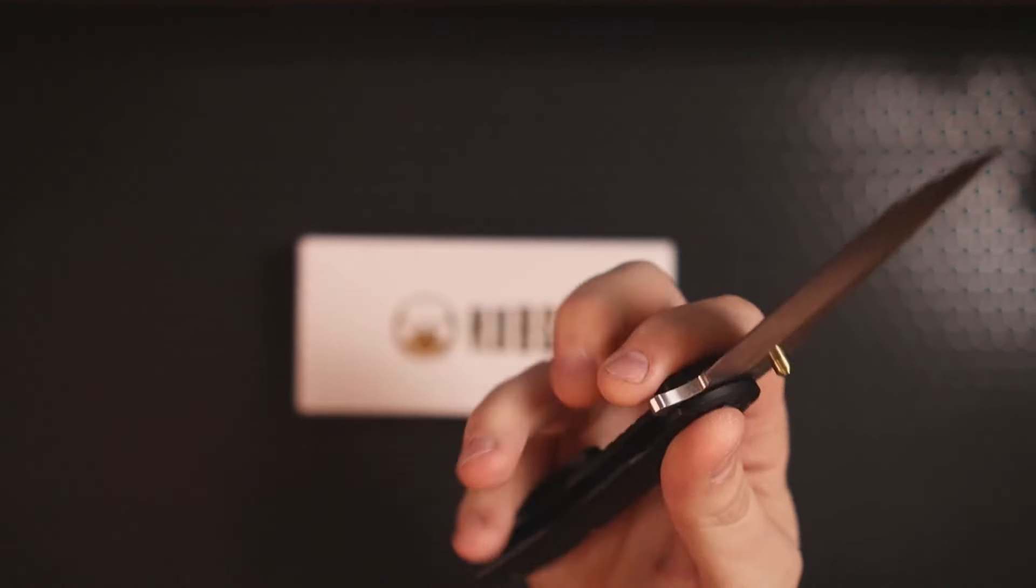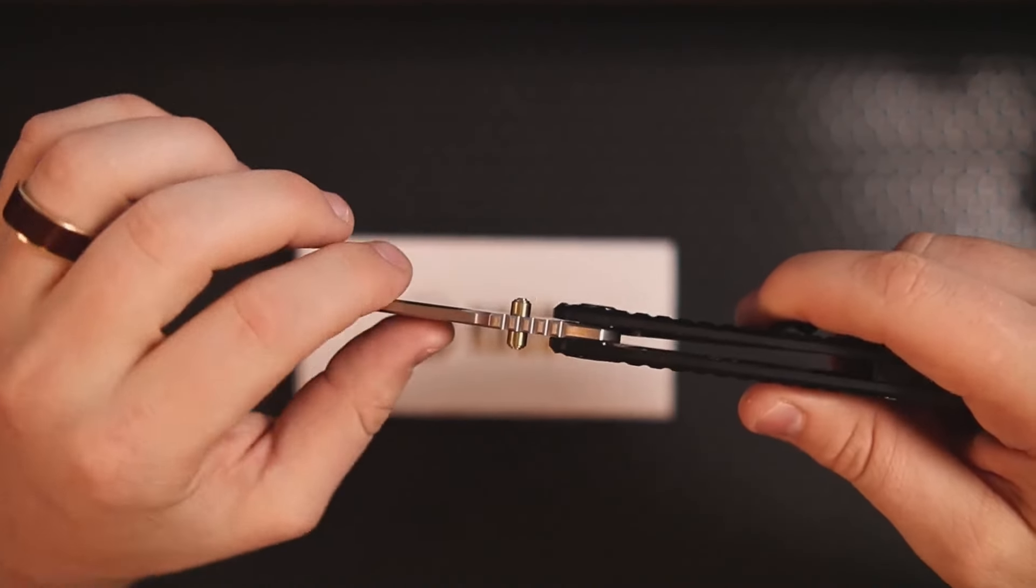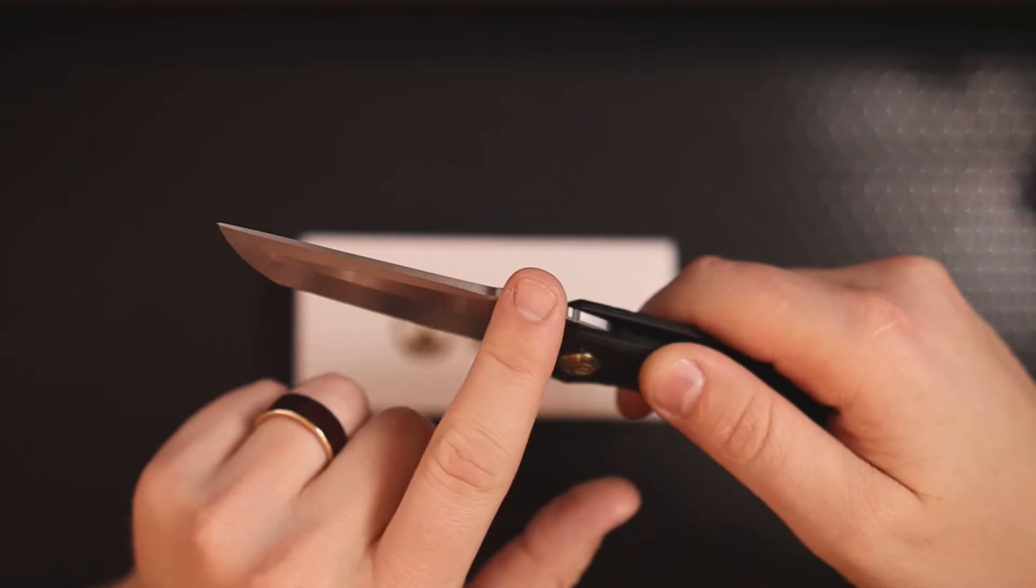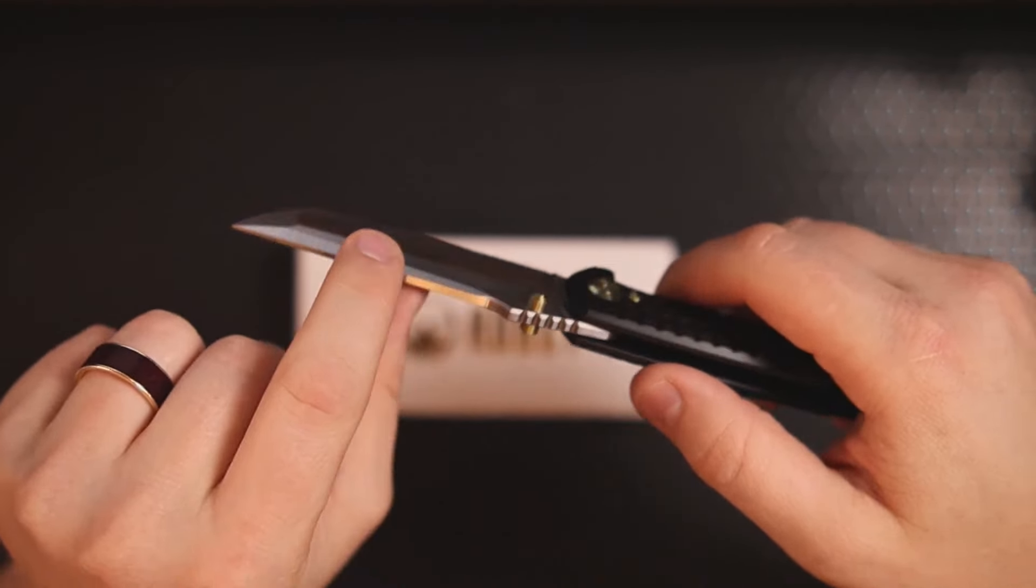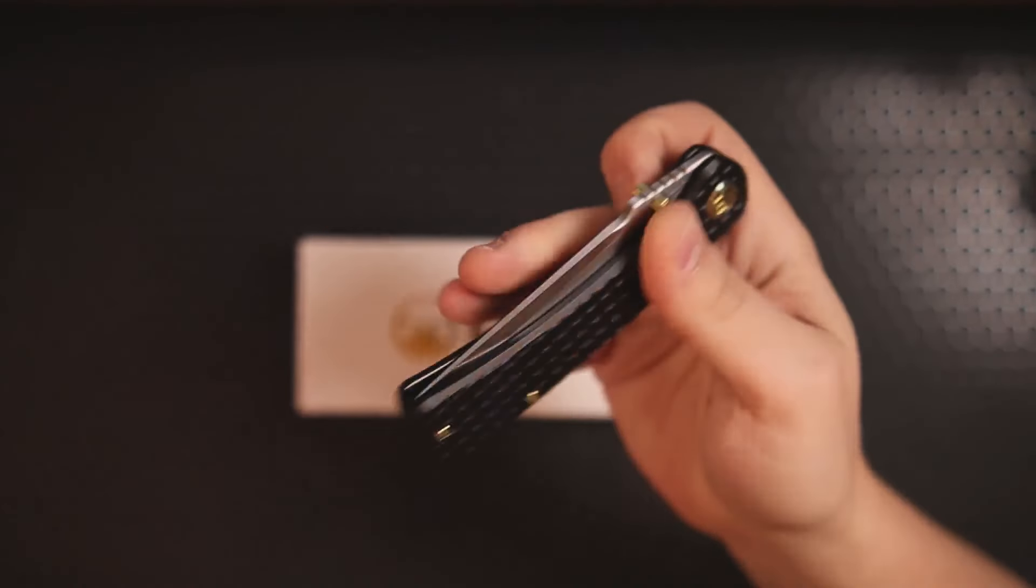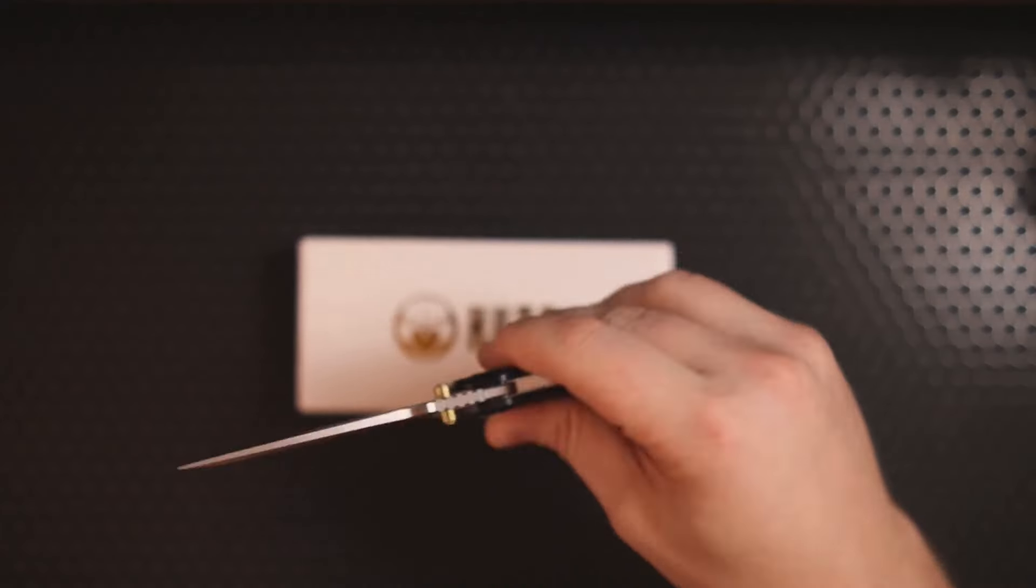And that pocket clip being a 3D milled variety is going to disappear entirely. On the spine of the blade we have some nice jimping at this ramp point. It's as far out as it could possibly go without hitting that swedge and it works rather well.